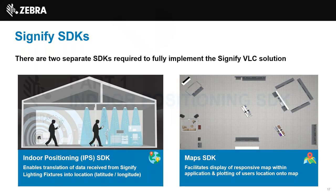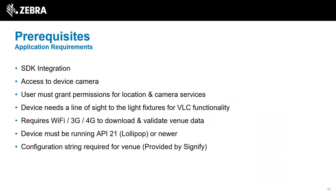Moving into the indoor positioning SDK, there are a few prerequisites. The SDK will have to be integrated within the app. You'll need access to the device's camera, and the user will have to grant permissions for the camera, as well as location services. The device always needs a line of sight to the luminaries to be able to use VLC - if it's in your pocket, the camera won't pick up the lights. There would need to be some form of connectivity, either Wi-Fi or cellular, to download and validate venue data. It runs on Lollipop or newer, and you'll need a configuration string provided by Signify for each installation.